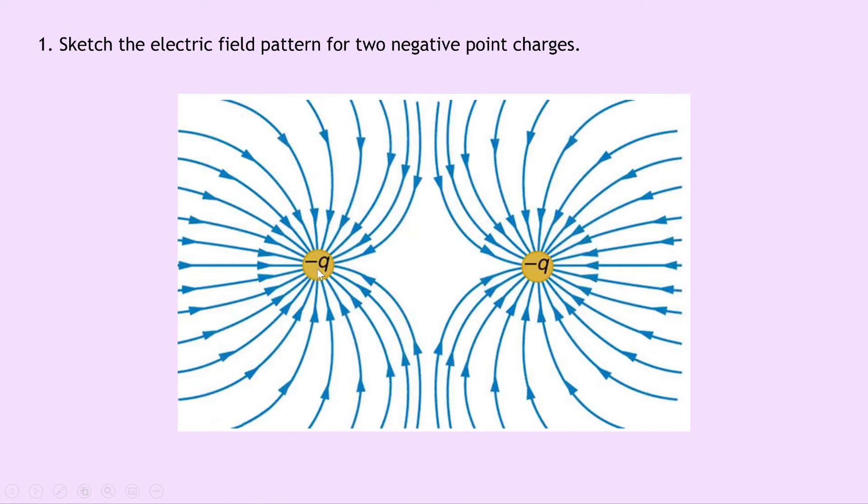So there's my two negative charges labeled negative q and you'll see that we've got this pattern in the middle where there are no electric field lines. They've cancelled each other out. However the ones that are drawn in the middle there show that the lines want to get away from each other because remember two negative charges near each other will want to repel each other.